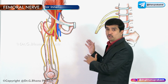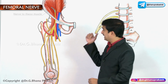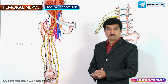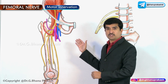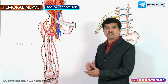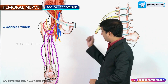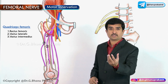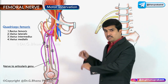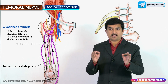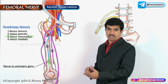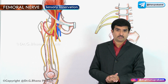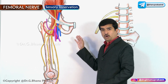Regarding motor innervation, the femoral nerve supplies the iliacus and pectineus muscles. The anterior division specifically gives innervation to the sartorius, while the posterior division gives innervation to the quadriceps femoris — which includes rectus femoris, vastus lateralis, vastus intermedius, and vastus medialis. The articular genu is supplied by a branch from the nerve to vastus intermedius.